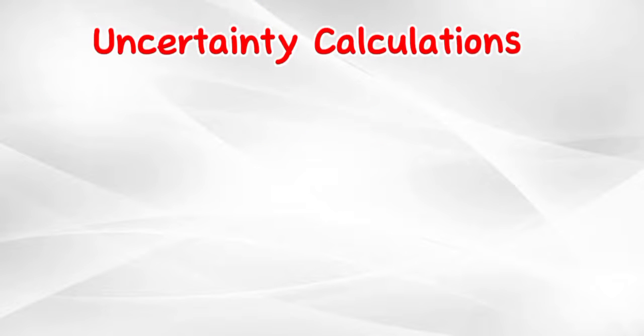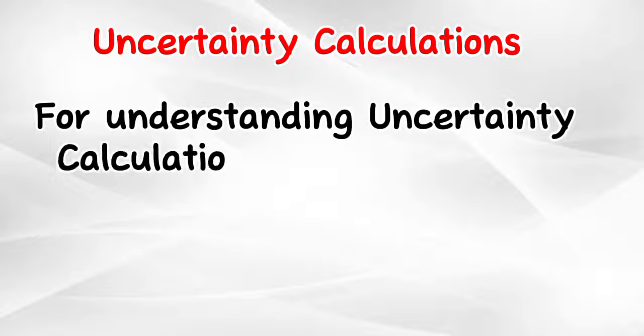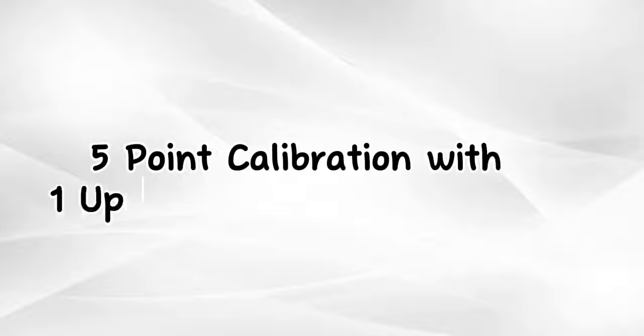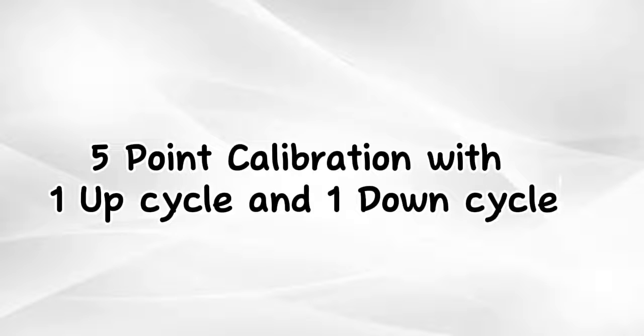For understanding uncertainty calculations, we will take an example of pressure gauge calibration: five-point calibration with one up cycle and one down cycle.